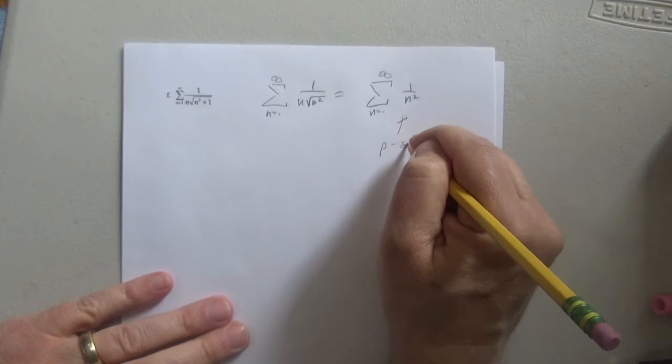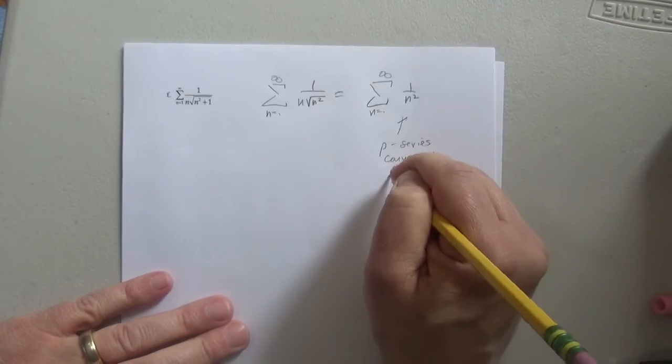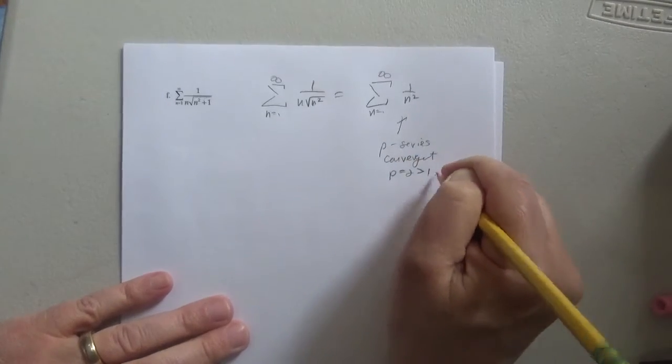So this is a p-series convergent p equals 2, which is greater than 1.